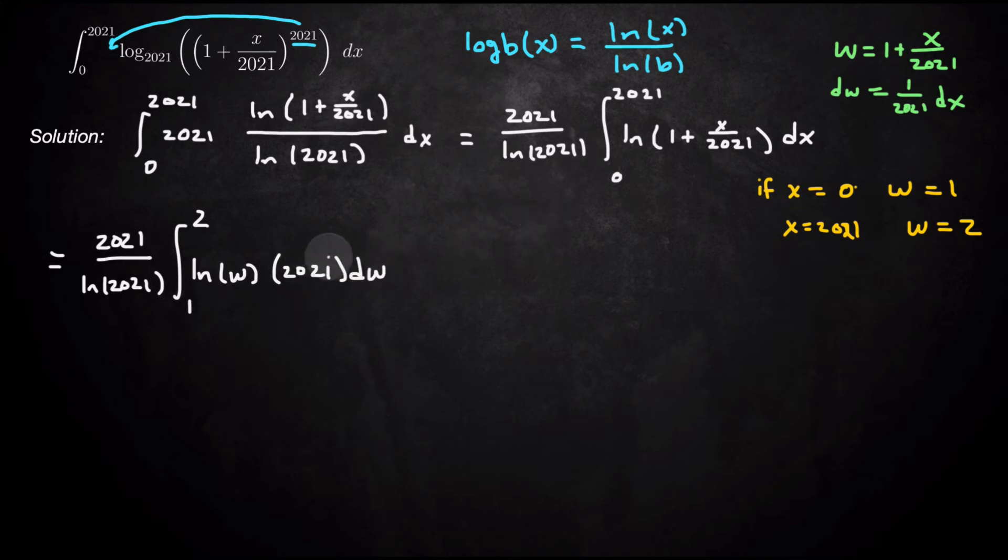And so actually, I can pull that 2021 out front and make it 2021 squared. So this is 2021 squared over natural log of 2021. And I go from 1 to 2, natural log of w dw.